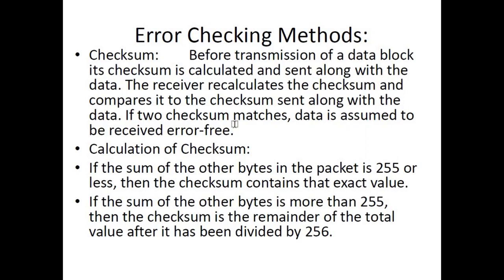The next method is checksum. Before transmission of a data block, its checksum is calculated and sent along with the data. The receiver recalculates the checksum and compares it with the one sent. If the two checksums match, data is assumed to be received error-free. If the sum of the bytes in the packet is 255 or less, the checksum is that exact value. If the sum is more than 255, the checksum is the remainder after dividing the total value by 256.